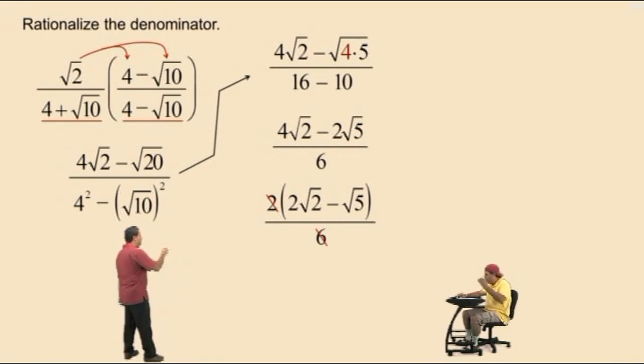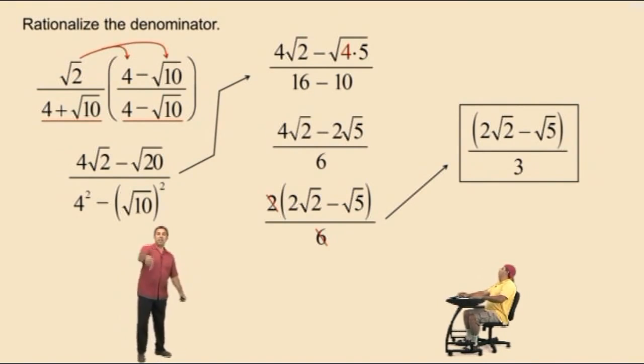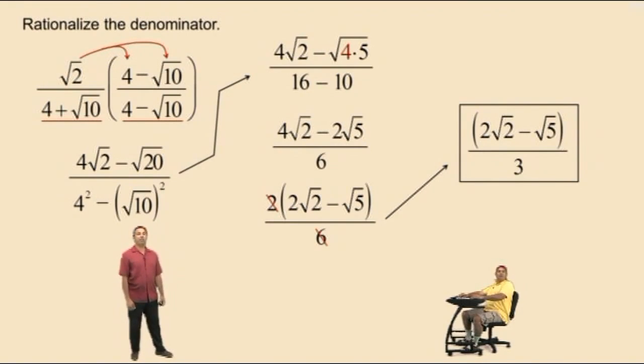And so, let's write our final answer over there. Notice the 2 and the 6 cancel. That reduces to 1 over 3. And so, our numerator is 2 square roots of 2 subtract square root of 5 over 3. Don't forget to circle or box your answer. Now, that was a good problem.